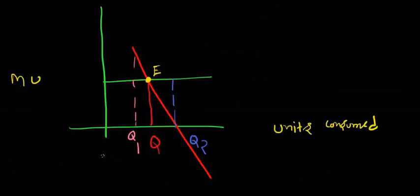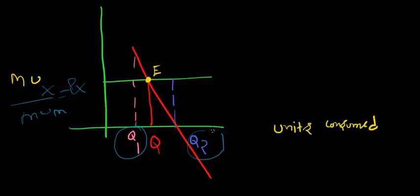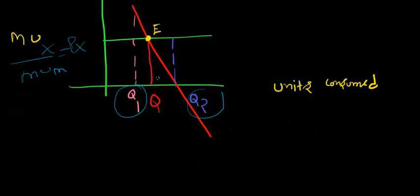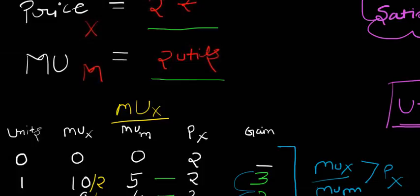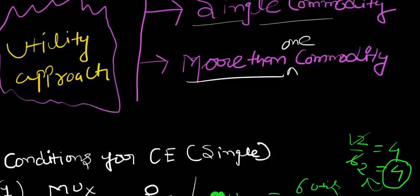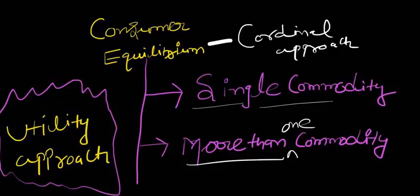This can also be understood with the help of a diagram. The consumer reaches equilibrium at point E, where MU_x ÷ MU_m equals P_x. At quantities Q1 and Q2, he does not reach the same maximum level of satisfaction, so equilibrium is only at Q. If there are any questions regarding this model or suggestions to improve the content, please let us know. Thank you for watching.